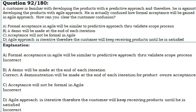C. Acceptance will not be formal in Agile. Incorrect. D. Agile approach is iterative therefore the customer will keep receiving products until he is satisfied. Incorrect.